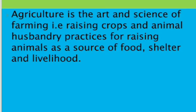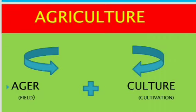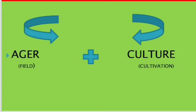Raising animals as a source of food, shelter, and livelihood. What does crop cultivation mean? Crop cultivation is basically the cultivation of soil. It includes crop production — how we produce our crops — and livestock rearing for raising animals as a source of food and livelihood. Now, the word agriculture comes from the Latin language.